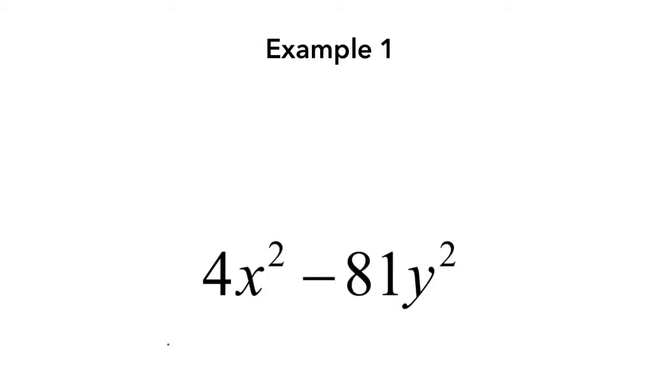Let's start with this example: 4x² - 81y². When we factor problems such as this, all we're really doing is reversing the multiplication.